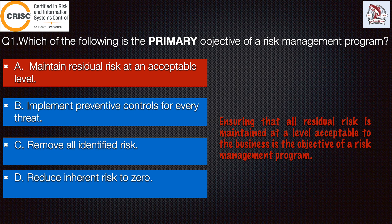Moving to Option B: implement preventive controls for every threat — this is incorrect because implementing controls for every threat is not the objective of the risk management program. The program considers known threats and determines risk responses based on the enterprise's risk appetite and acceptance level.